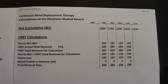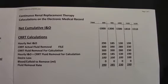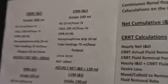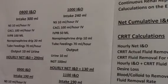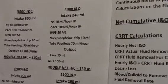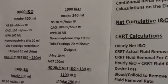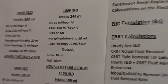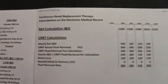Now let's go to the 10 o'clock time slot. The net cumulative I&O is now negative 1,580. The hourly net I&O is only 130. The reason why — if we return back to the I&O flow sheet — you will notice that the NG tube put out 100 ml that hour, and because of that, our net I&O is only 130 ml.